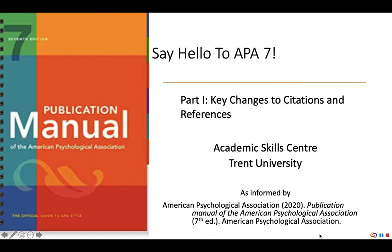My name is Dana and I'm an instructor at the Academic Skills Center. I'm here today to introduce you to one of the better developments of 2020: the newest edition of the American Psychological Association's Manual of Style, or as most people refer to it, APA 7. In this video, I will explain some of the key changes that have been made in this newest edition. This video is designed for undergraduate students who already have a working knowledge of APA but have been using APA 6. If you've never used APA before, you may want to start by watching the Academic Skills video, From Citations to Formatting using APA 7.